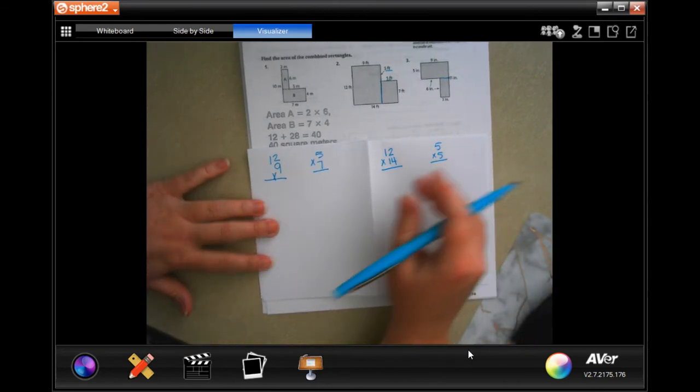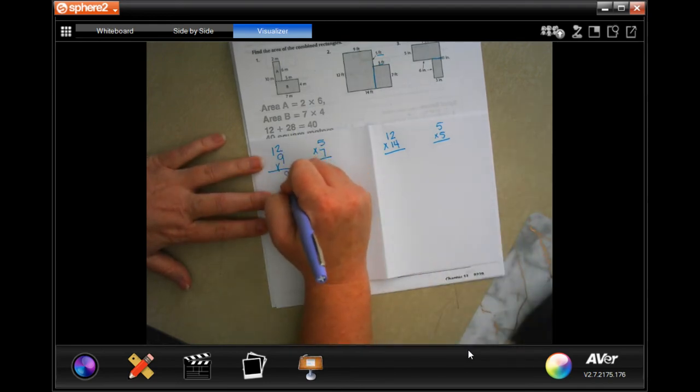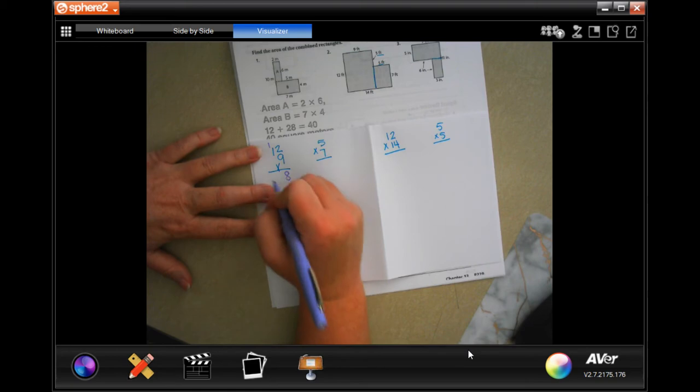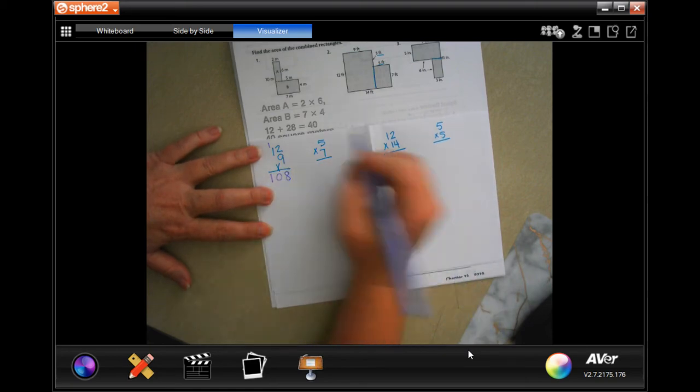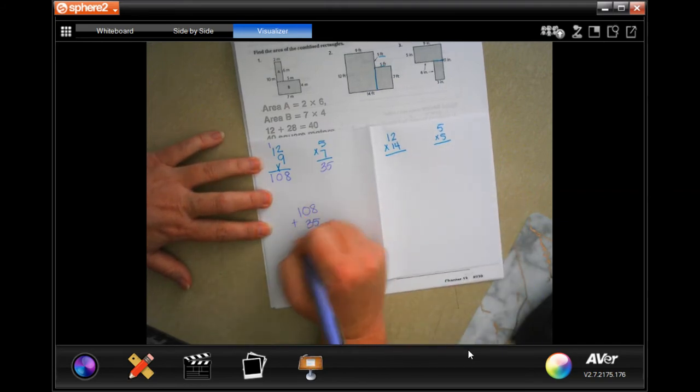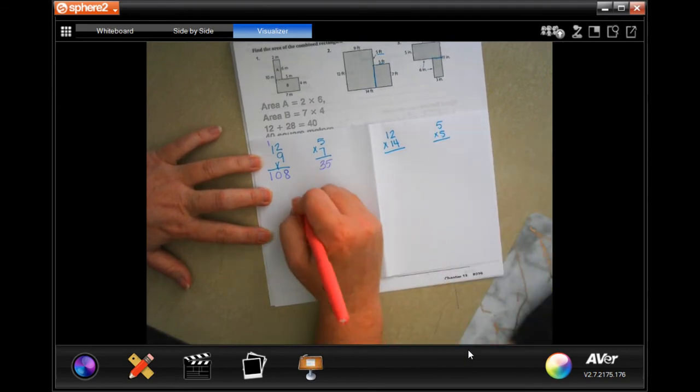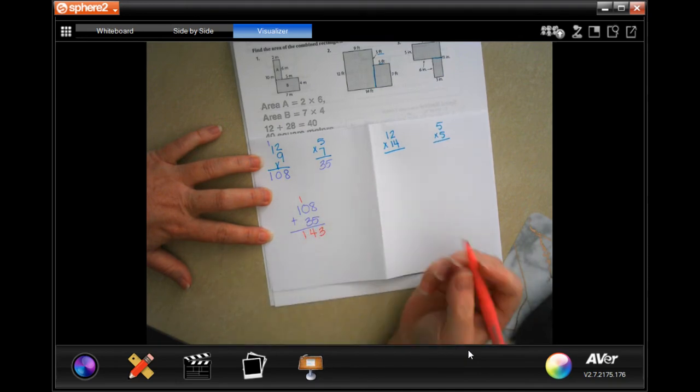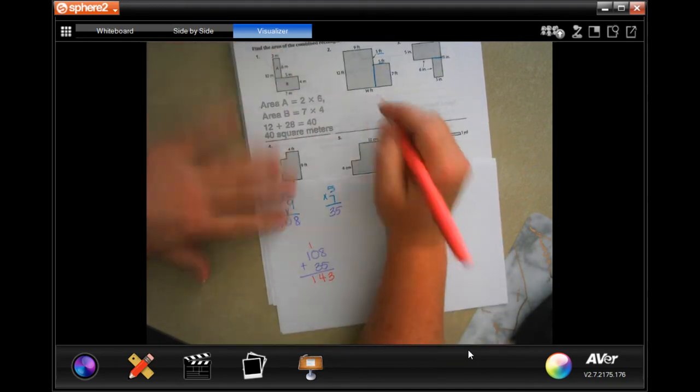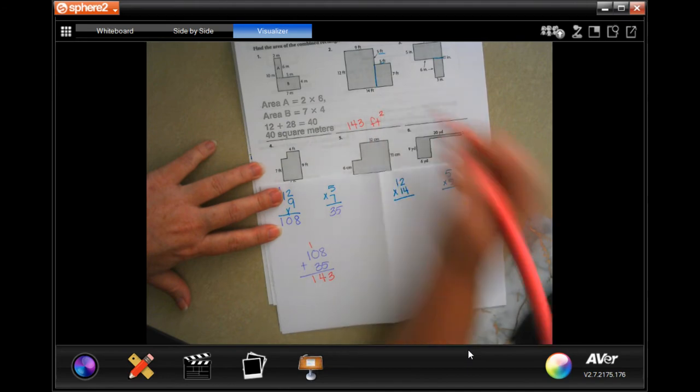So we're going to go ahead and do this one first. 9 times 12: 9 times 2 is 18, carry the 1, 9 times 1 is 9 plus 1 is 10. 5 times 7 is 35. Now we're just going to go 108 plus 35: 8 plus 5 is 13, carry the 1, 1 plus 3 is 4, and bring our 1 down. So 143, and it's in feet and we multiplied feet by feet so it's feet squared.